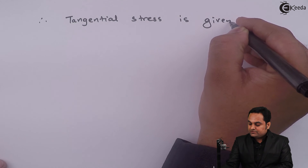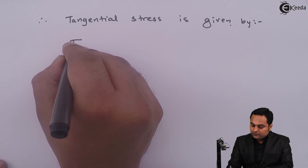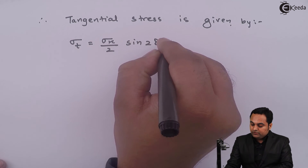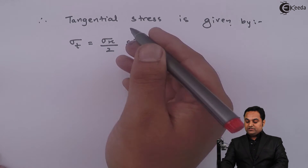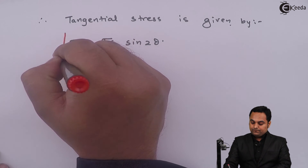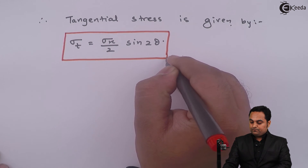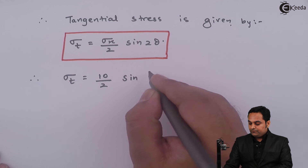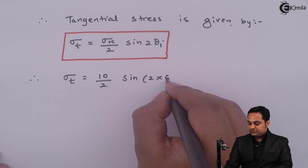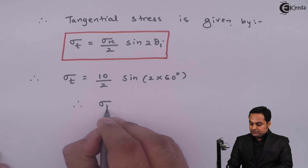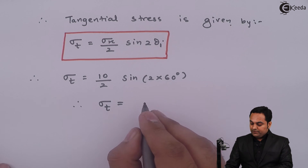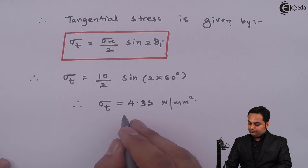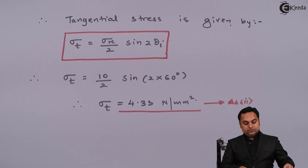In a similar manner, we calculate tangential stress. The formula is: Sigma_t = (Sigma_X / 2) · sin(2·theta1). This formula gives the tangential stress, also called shear stress. Substituting Sigma X = 10 and theta1 = 60 degrees, so 2·theta1 = 120 degrees. The tangential stress comes out to be 4.33 Newton per mm square. This is the second answer.